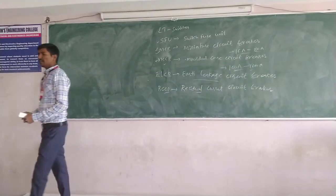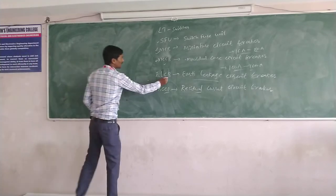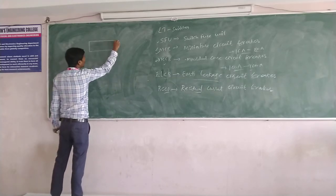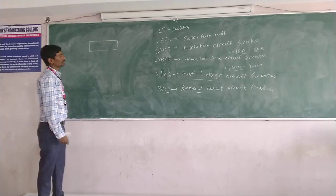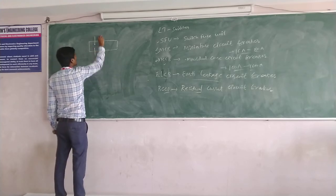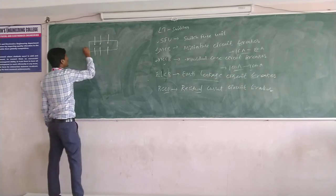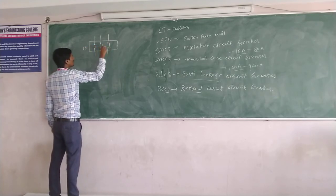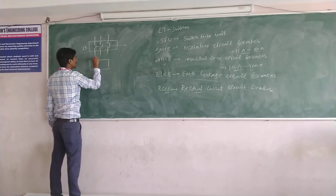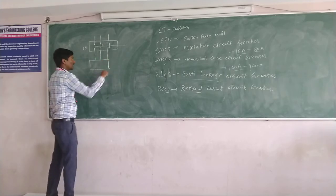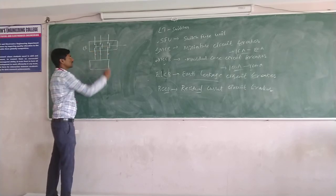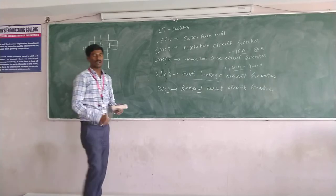Now coming to the ELCB — Earth Leakage Circuit Breaker. This circuit breaker is used to protect devices from earth leakage. If I take a three-phase supply connected to a circuit breaker with a three-phase load, whenever the contacts are closed, current flows into the load and the machine or load will run normally.